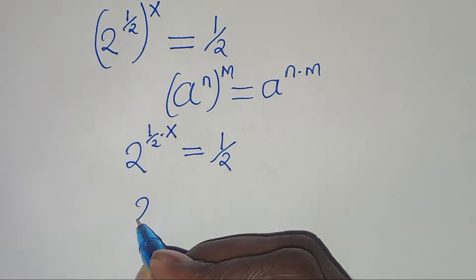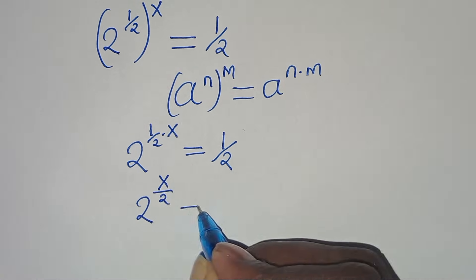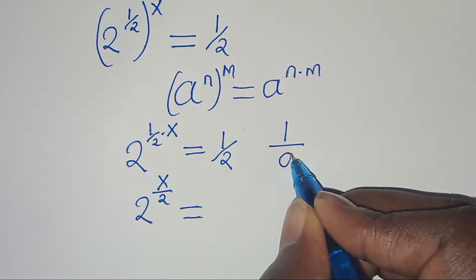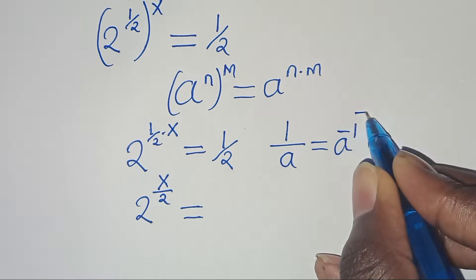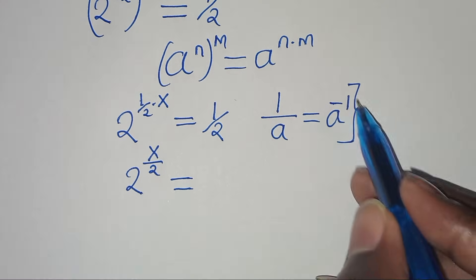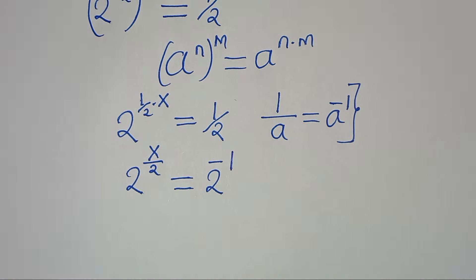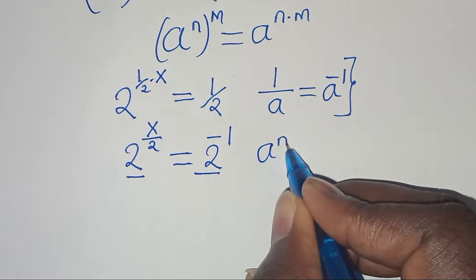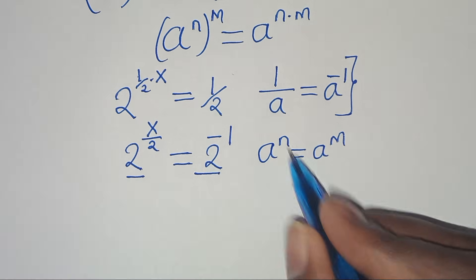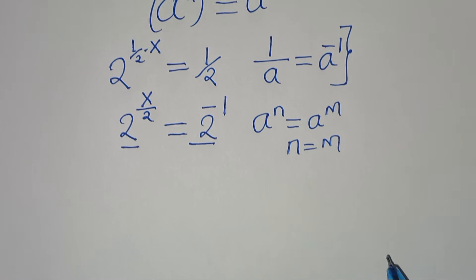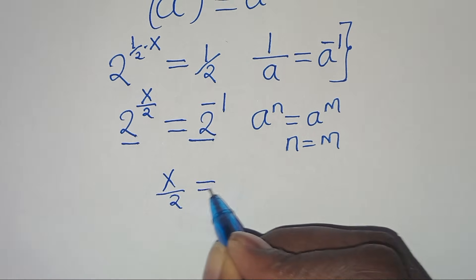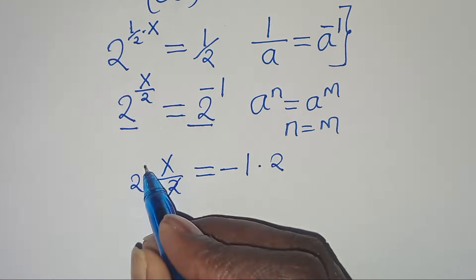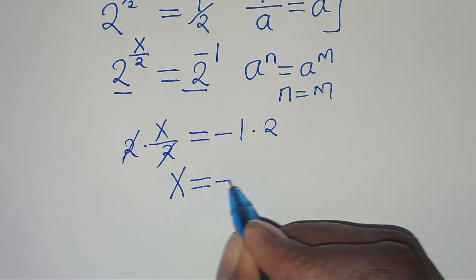On the left-hand side we have 2 to the power of x over 2, equal to one half. Remember, one half is in the form of 1 over a, which equals a to the power of minus 1. Applying this property, one half is the same as 2 to the power of minus 1. Since the bases are common, x over 2 = minus 1. Multiplying both sides by 2, we get x = minus 2.